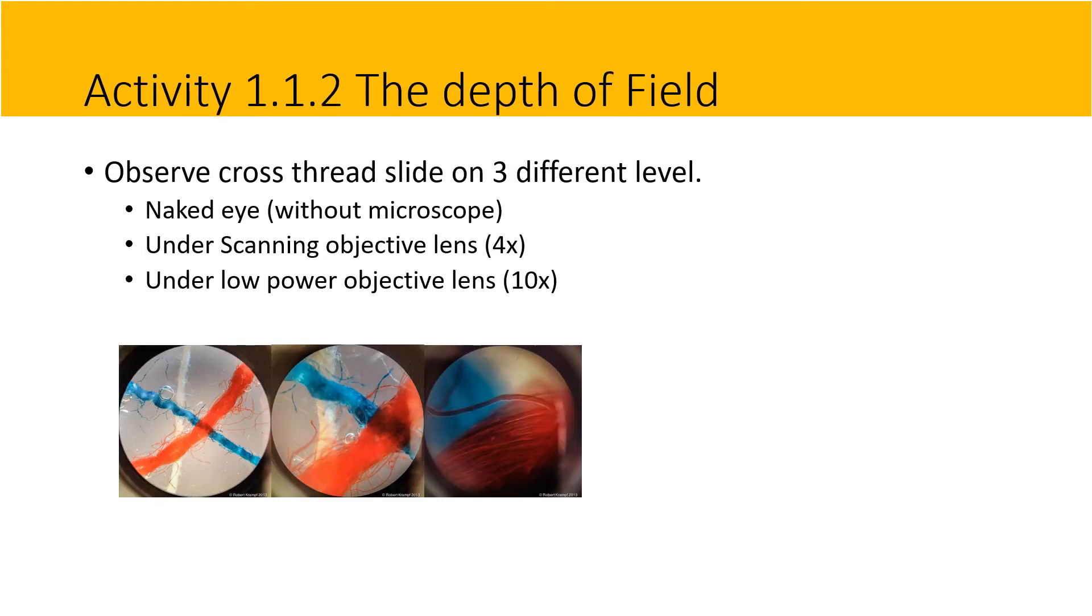Activity 1.1.2: the depth of field. Observe the cross-thread slide on three different levels. Level 1, by naked eye. Level 2, under the scanning objective lens. Level 3, under the low-power objective lens.